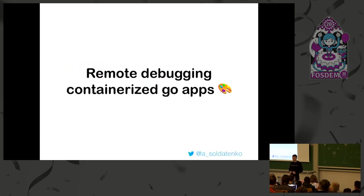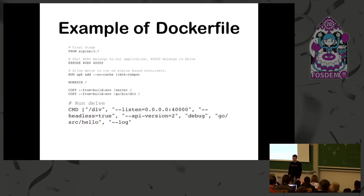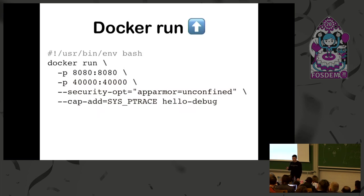But what about remote debugging for containers? I have a more tricky example. Let's say you have a web application deployed to some Kubernetes cluster. You can spin up your pod and connect somehow. For debugging needs, I just add an extra line which runs, at the same time, a headless Delve server. Delve is a client-server application. Then I can build it and run it - and I have a demo.